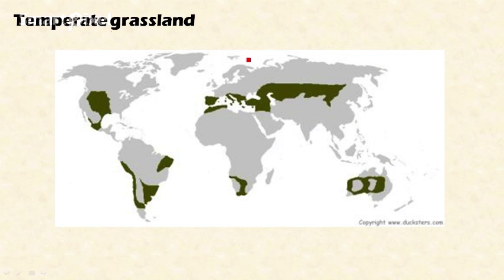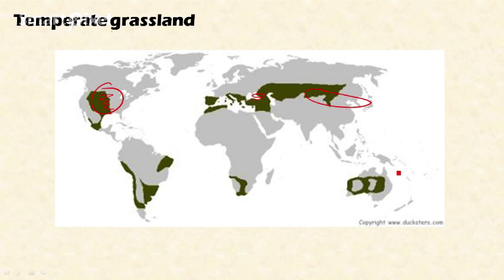The next biome is temperate grassland, which occupies North America, Ukraine, and parts of Russia. This is dominated majorly by grasses with very low rainfall. The fauna includes bison, antelope, cattle, rodents, and prairie dogs, and it is also rich in diverse ground-nesting birds. Temperate grassland is a distinct kind of biome.